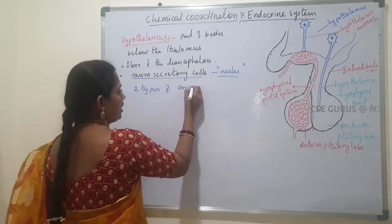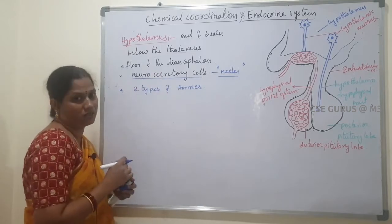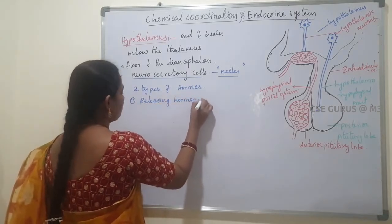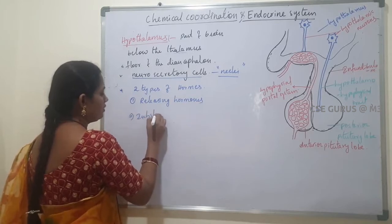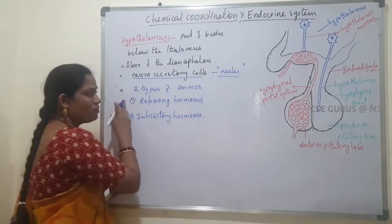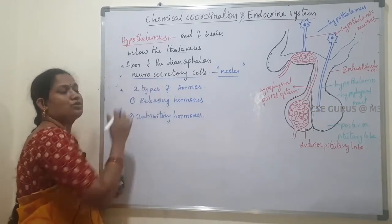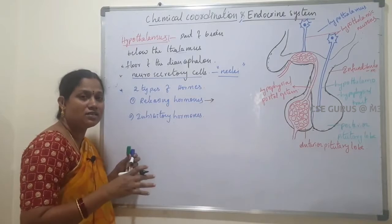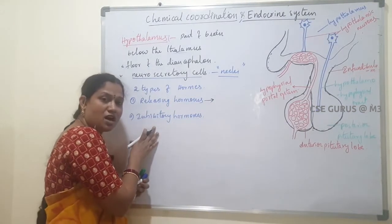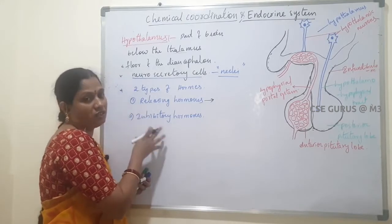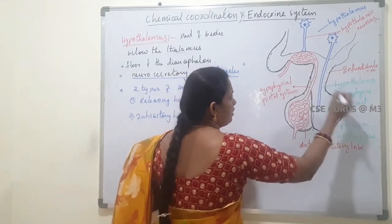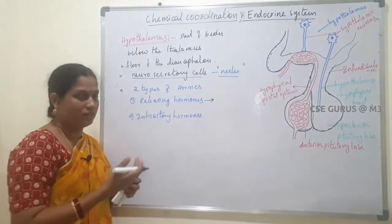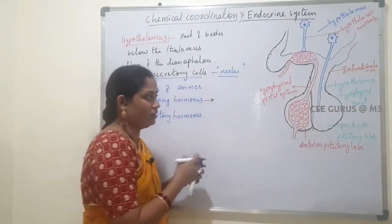The two types of hormones secreted by neurosecretory cells are releasing hormones and inhibitory hormones. Releasing hormones regulate the release of hormones from the pituitary gland. Inhibitory hormones inhibit the secretion of the pituitary gland. The pituitary gland is connected to the hypothalamus with the help of the infundibulum.